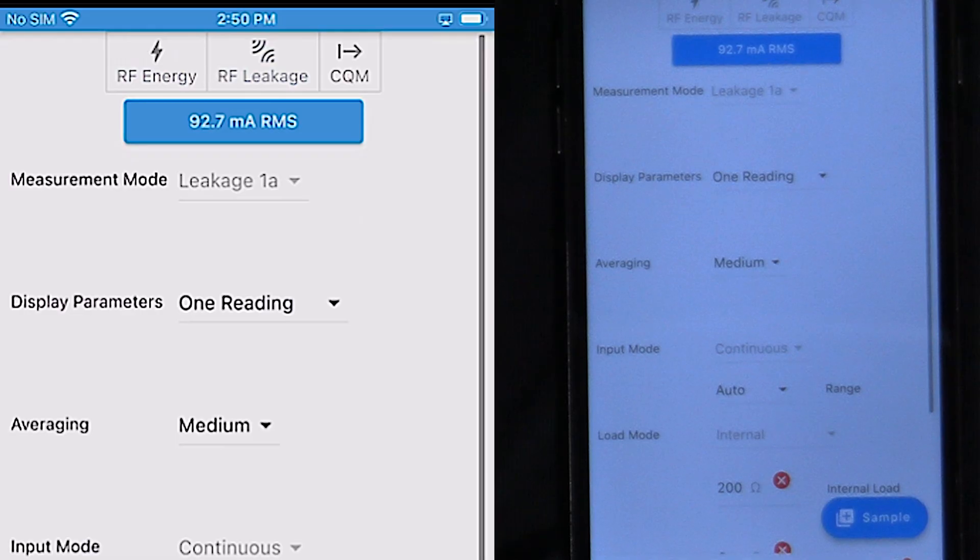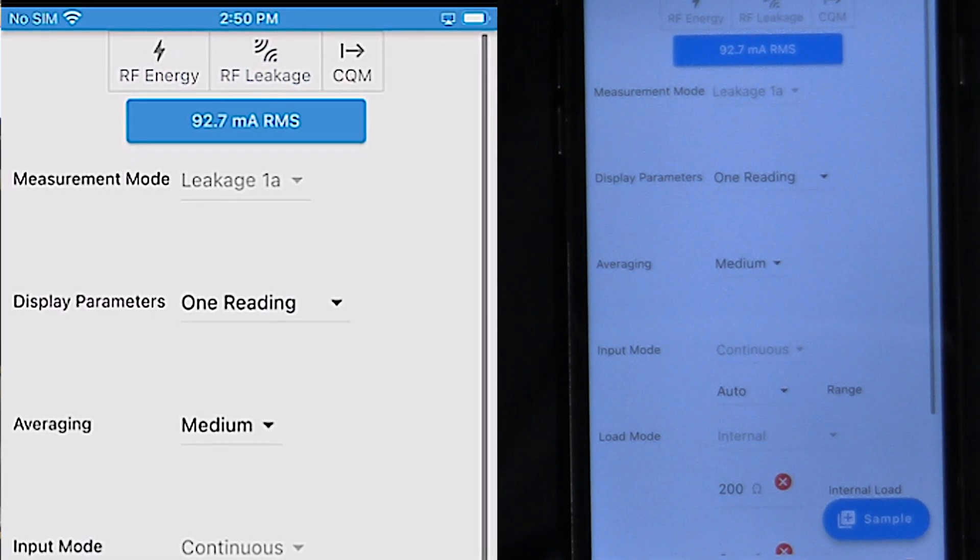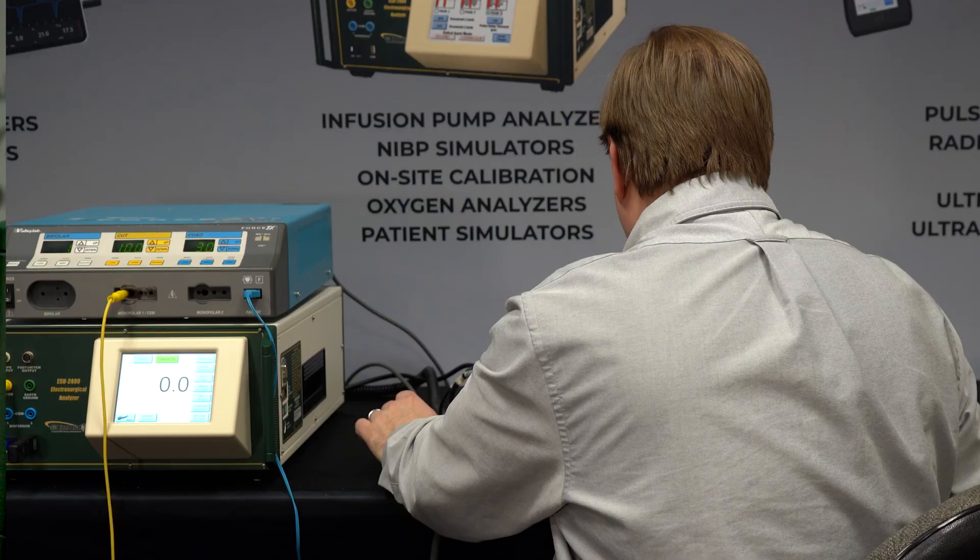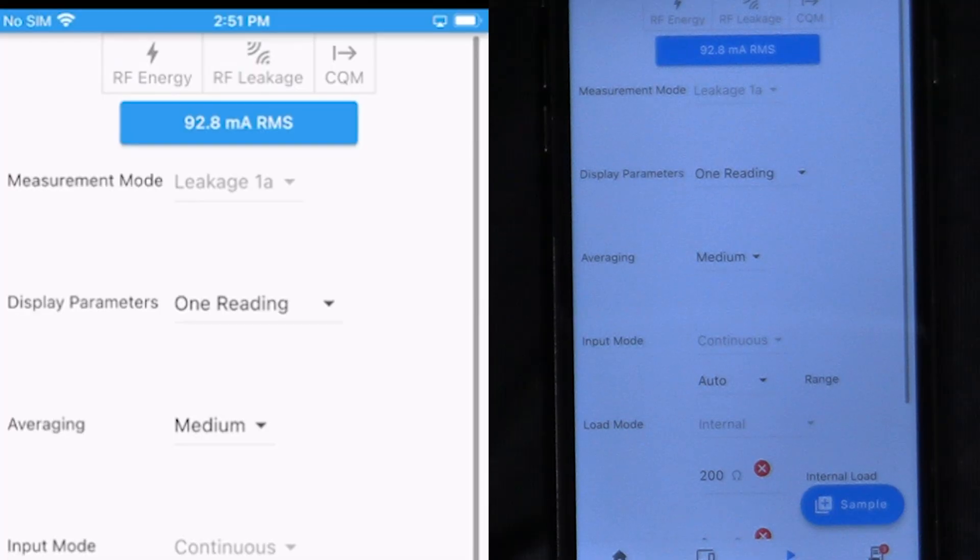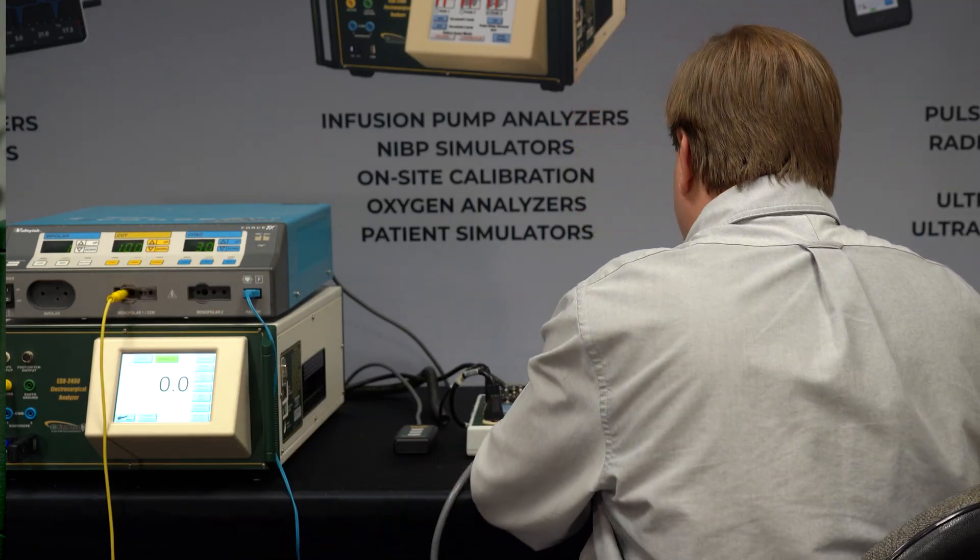I can measure the output of the generator. This is our leakage. We're measuring from the active port to earth ground. I can press sample and that gives me my reading on the MyBC Mobile. Now we can continue on to do any of the other ports. We could test monopolar 2, we can test bipolar and all of the various leakage modes.